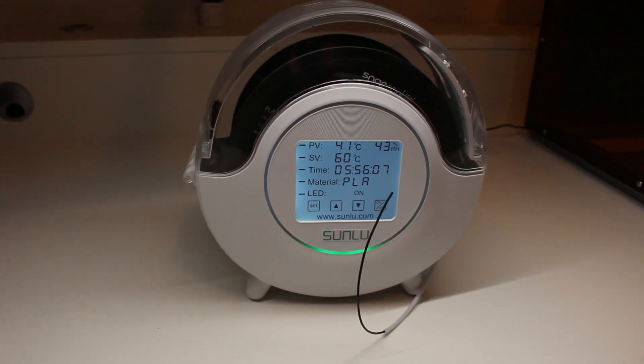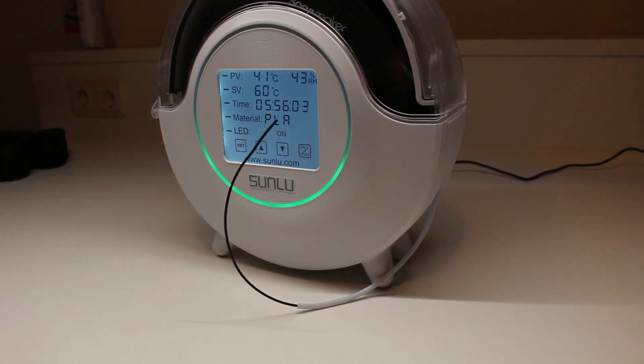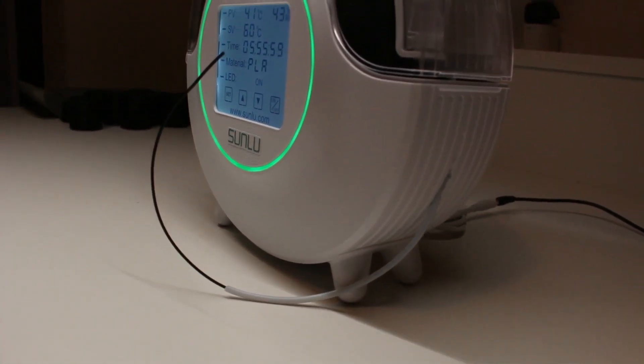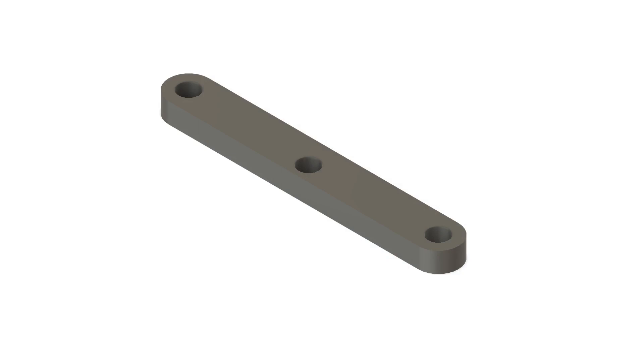The filament will be guided out of the housing through the new slotted hole inside a Bowden tube. To make sure the Bowden tube does not touch the heater plate, I designed a simple 3D part with two holes which match for the original screws to fix it and one center hole with a diameter of 4 mm to fit the Bowden tube.